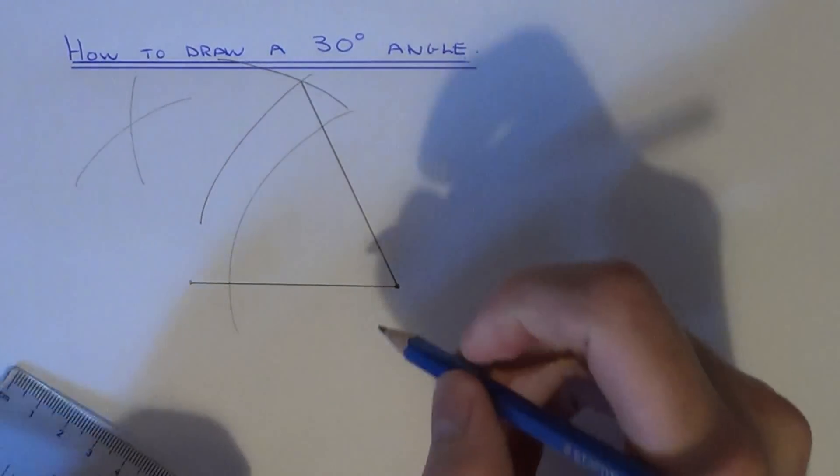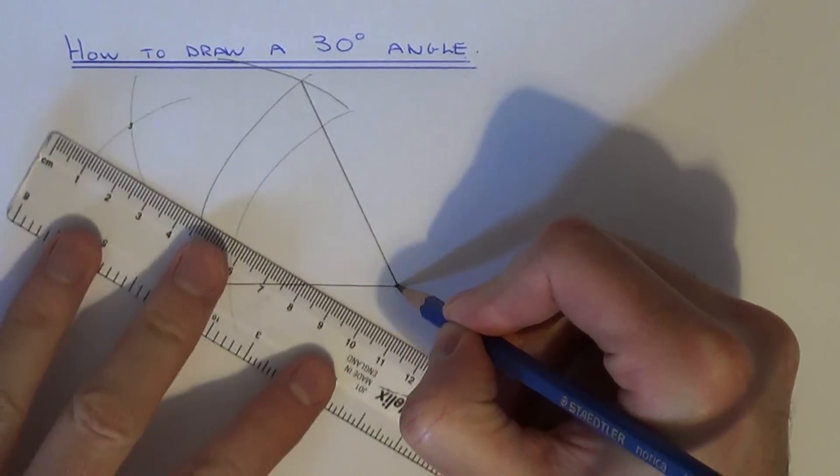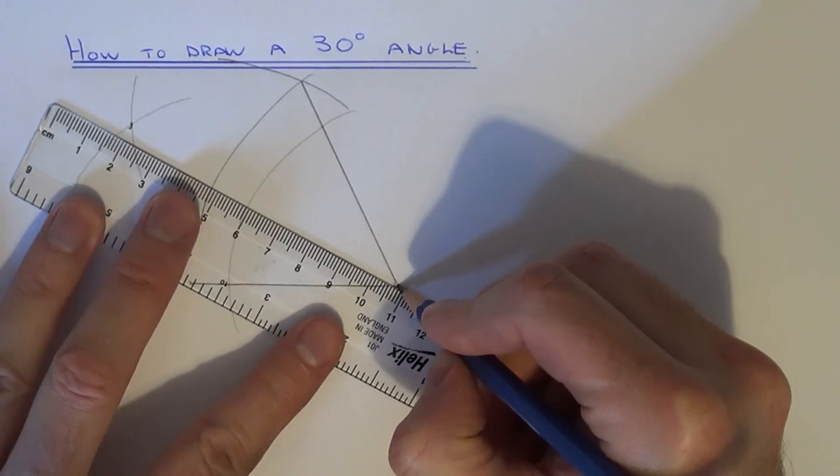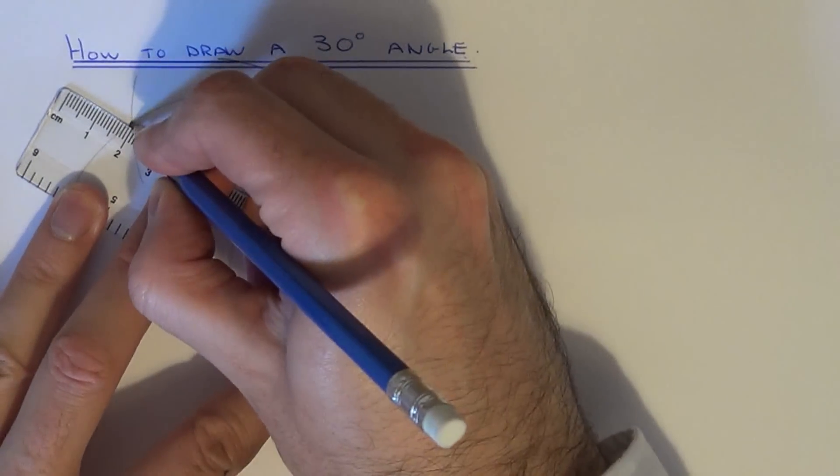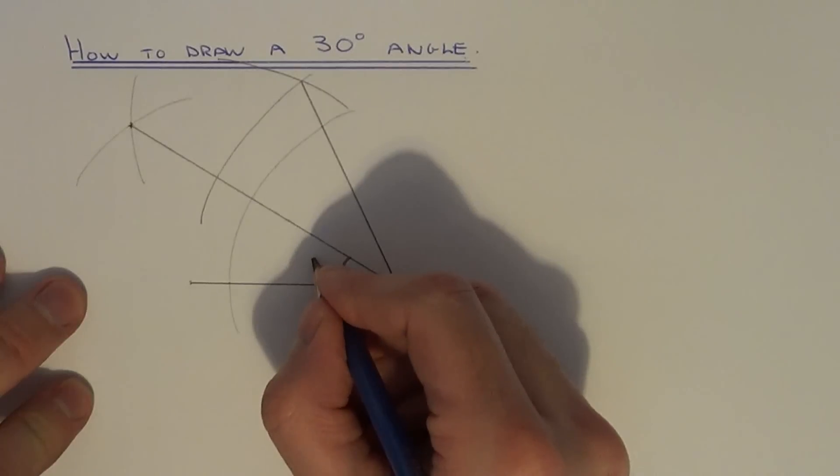And if you join this intersection point here back to the right hand side, this angle here will be 30 degrees.